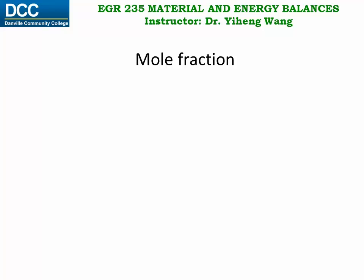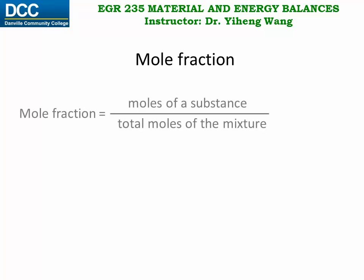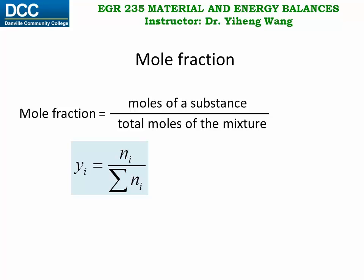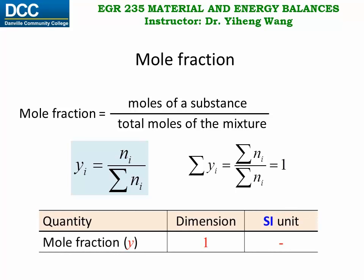Similar to mass fraction, the mole fraction of a component in a mixture is defined as the number of moles of this component divided by the total number of moles of all components in the mixture. Yi equals ni divided by the summation of ni. Similarly, if we add up the mole fractions of all the components in the mixture, we get one. Because mole fraction is also a ratio, it is also dimensionless.